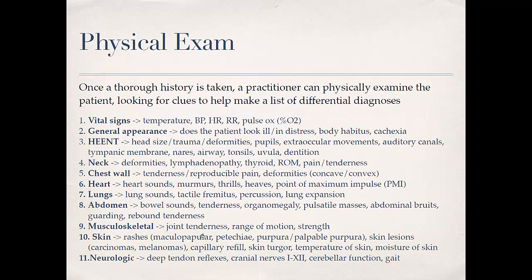Now that you've done all that, you're going to do a physical exam. You're not always going to do all components — most of the time, especially in a family medicine office or emergency room, you're going to examine the parts relevant to the patient's symptoms. Vital signs you'll always do. You'll look over the patient to see how much distress they're in. You'll check ears, eyes, nose, throat, the neck, the chest wall, heart, lungs, abdomen, musculoskeletal, skin, and neurologic.